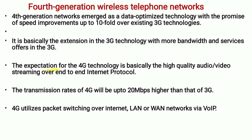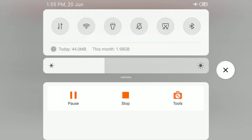The main expectation of 4G is high quality audio and video. Transmission rates are up to 20 Mbps, higher than that of 3rd generation cellular networks. This 4th generation utilizes packet switching over internet LAN or WAN via Voice over IP, that is VoIP. That's all about the different generations of mobile or cellular networks.